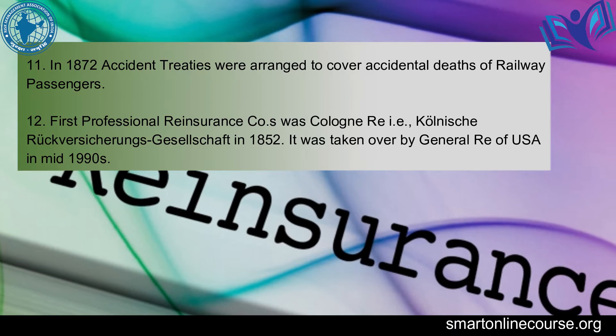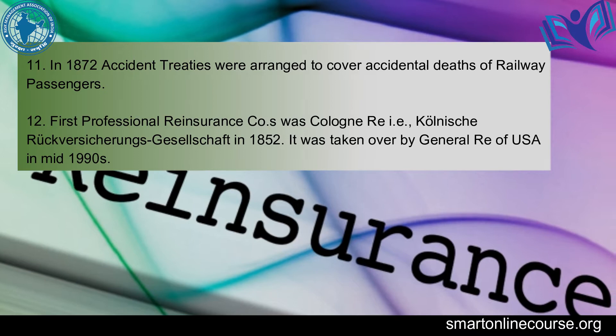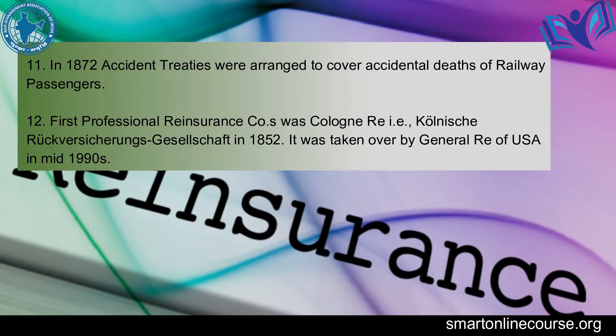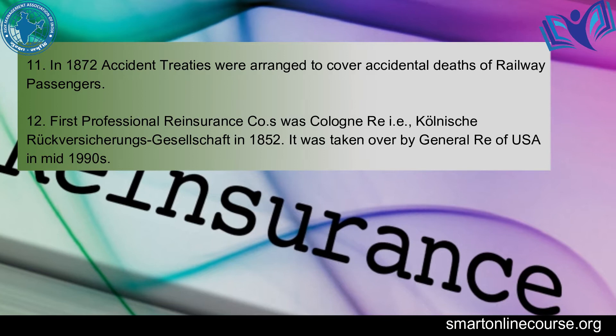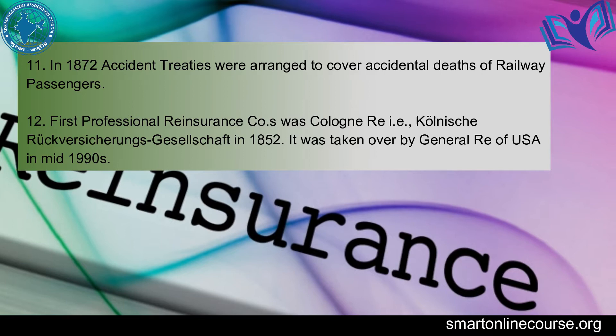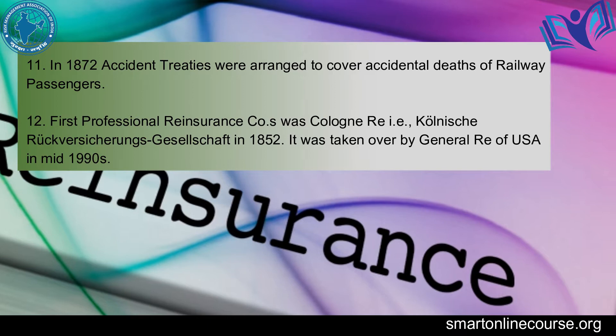The first retro treaty was concluded between Réunion Adriatica and La Gromel Compagnie d'Assurance. In 1872, accident treaties were arranged to cover accidental deaths of railway passengers. The first professional reinsurance company was founded in West Germany in 1852 — the first professional reinsurance company in the world — and it was taken over by General Re of USA in 1990.